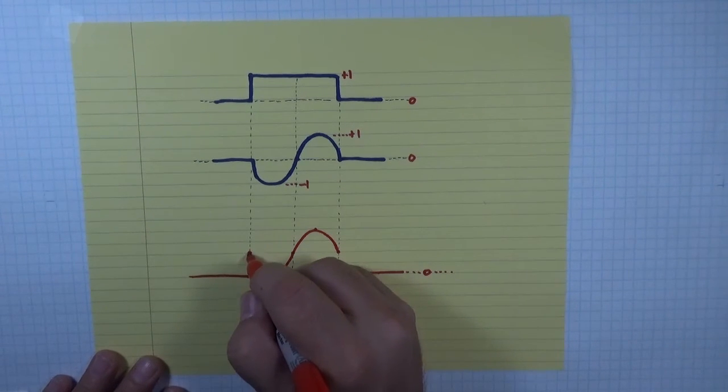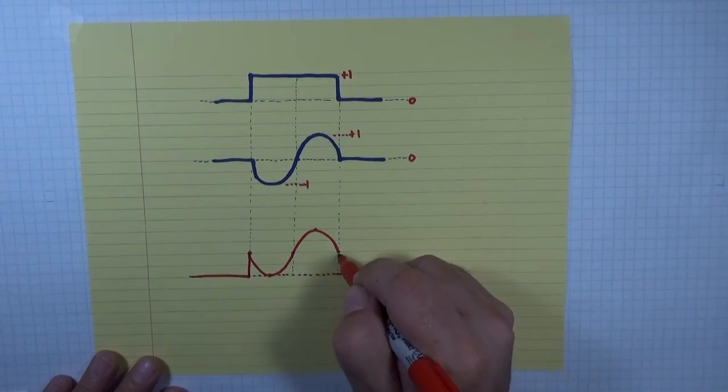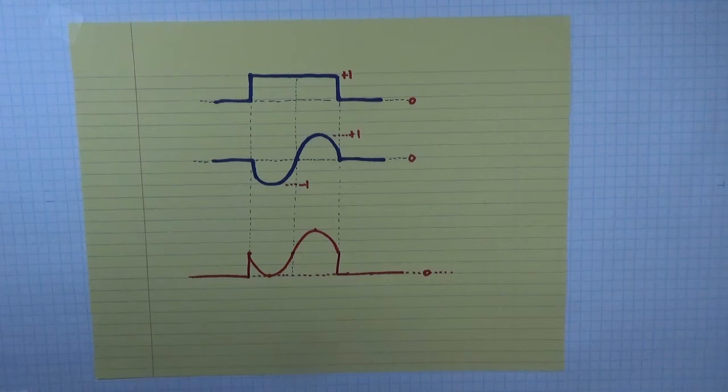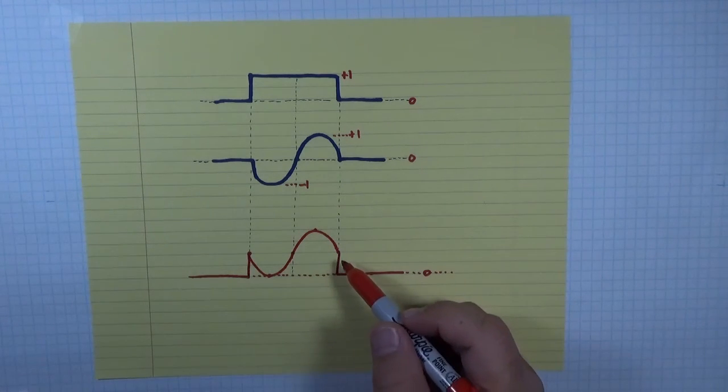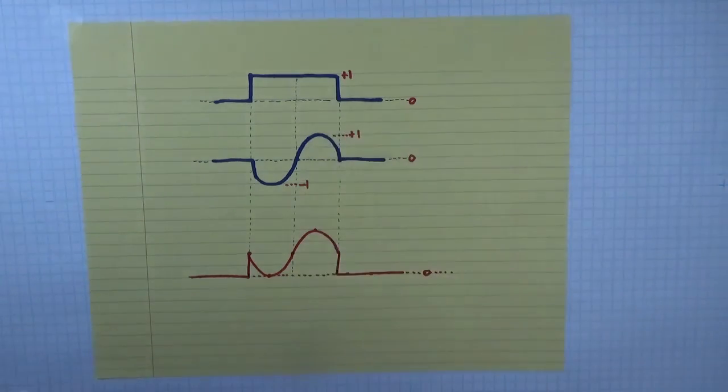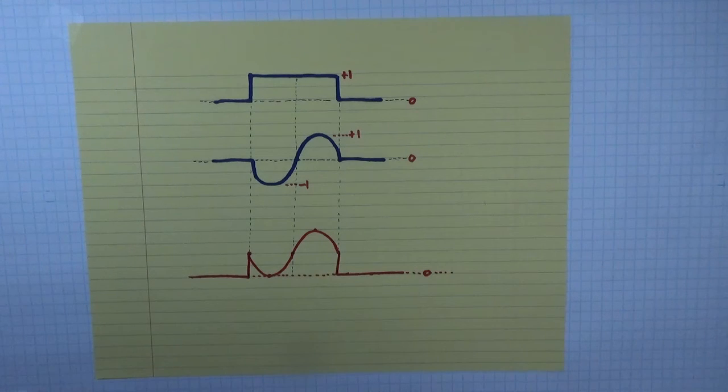And there we have our summed shape that comes from adding these two wave pulses together. I hope that's helpful, and we'll see you again soon for some more examples.